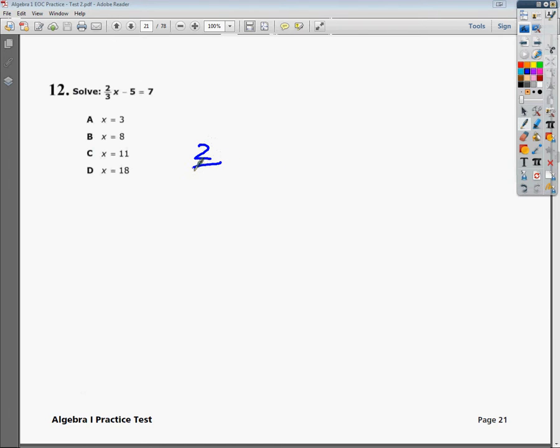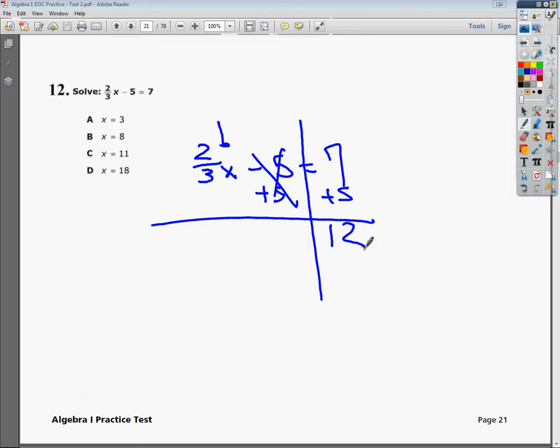So I'm going to write it down here. Now, my x is here. I need to get x by itself. So the first thing I'm going to do is move the thing furthest away from the x, which of course is the minus 5. So I add 5, cancel it out, 7 plus 5 would be 12.